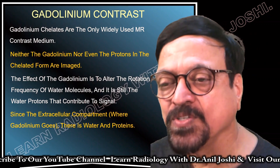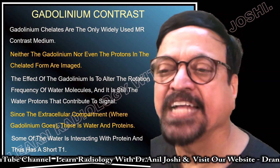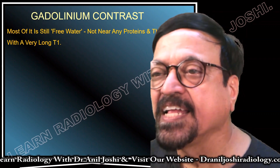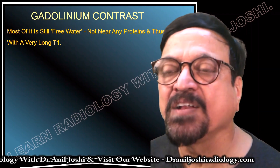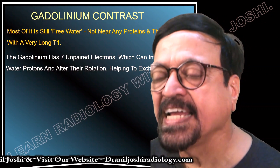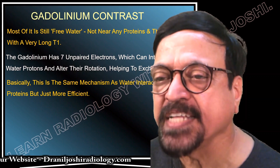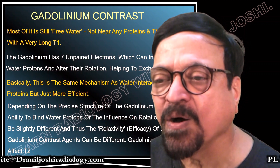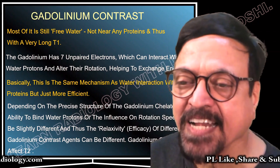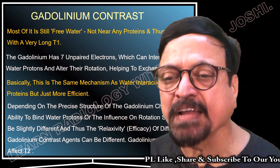In the extracellular compartment where gadolinium distributes, there is abundant water and proteins. Some water interacting with proteins has a short T1, while most free water has a very long T1. Gadolinium has seven unpaired electrons that interact with water protons and alter their rotation, helping to exchange energy — the same mechanism as protein interaction but more efficiently. The precise structure of the gadolinium chelate affects its ability to bind water and influence rotational speed, and gadolinium chelates also affect T2 to some extent.